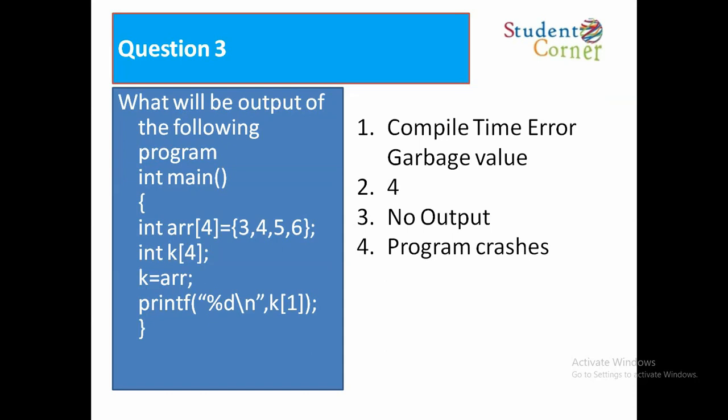Question number 3. What will be the output of the following program? Int main, int array of 4 is equal to 3, 4, 5, 6, int k of 4, k is equal to array, printf percentage d, k of 1. Option 1 compile time error garbage collection, option 2 is 4.